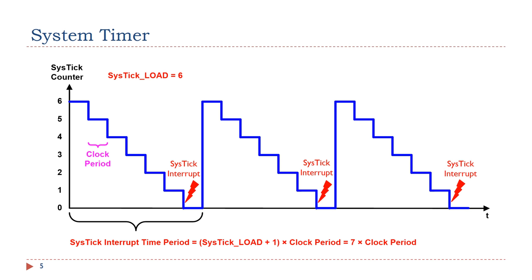The reload value is stored in the SysTick load register. The counter counts down from 6 to 0, giving a total of 7 unique values. When the counter makes a transition from 1 to 0, the system timer generates an interrupt request. On the next clock cycle, the counter is reinitialized to 6, and the counter counts down again on subsequent clock cycles. This counting process repeats.